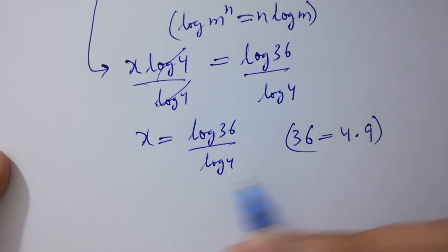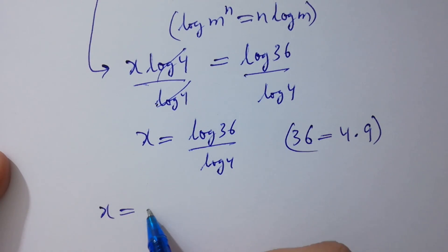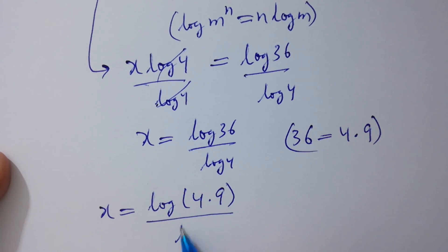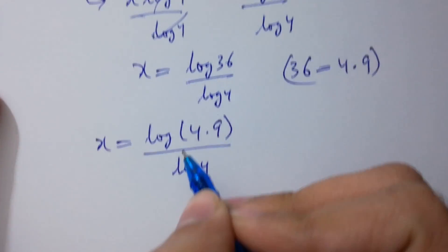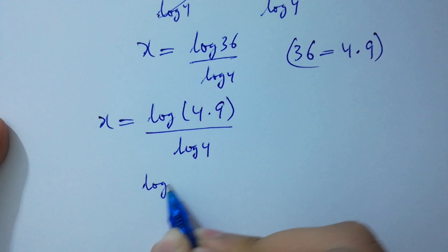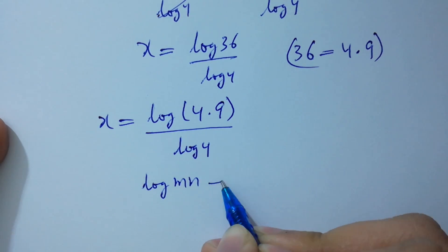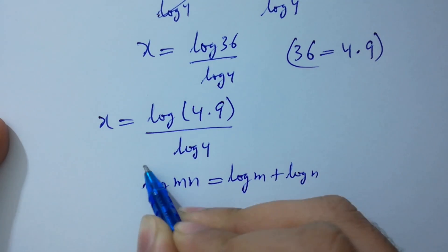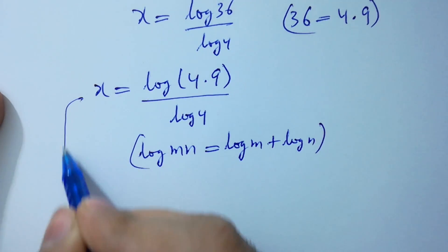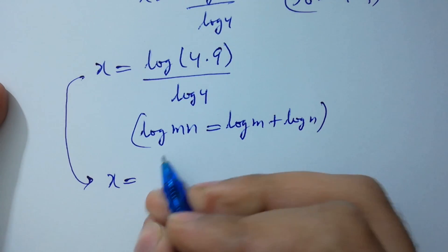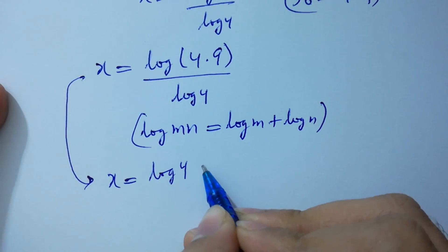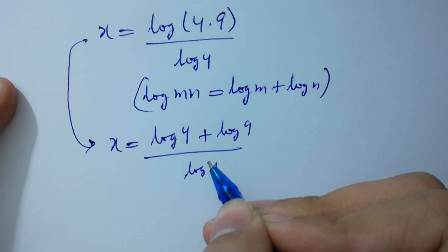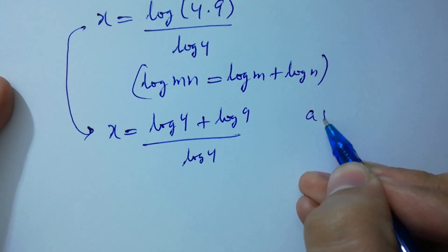x will be equal to log of 4 times 9 over log 4. As log m·n equals log m plus log n, so x will be log 4 plus log 9 over log 4, which is like a plus b over c.